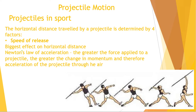Speed of release is the biggest factor - it has the biggest effect on horizontal distance. If you can train yourself to release the projectile at a faster speed, it will have the biggest impact on performance. Whether you're a long jumper hitting the board faster, or throwing a javelin by bringing the arm through faster, the projectile will travel furthest. This links to Newton's law of acceleration: the greater the force applied to the projectile, the greater the change in momentum and acceleration, and therefore the greater the horizontal distance travelled.